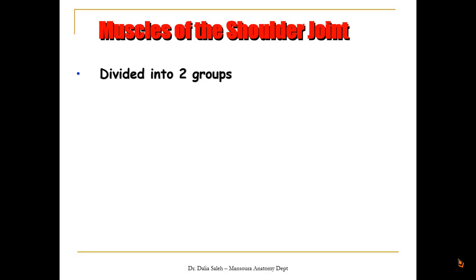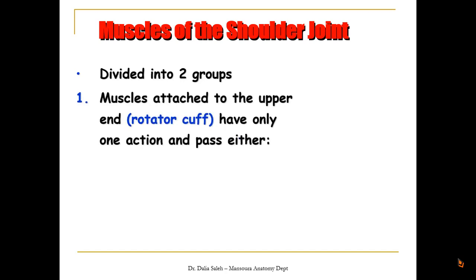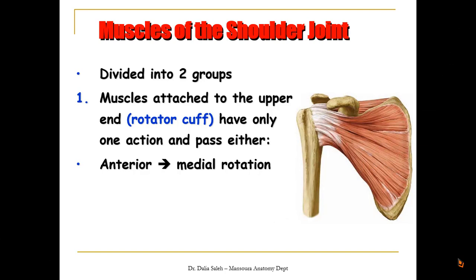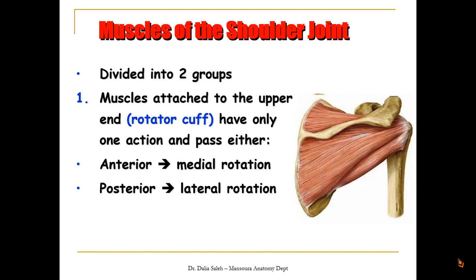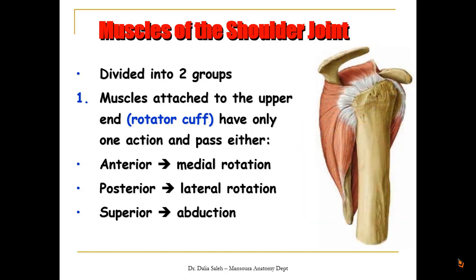The muscles of the shoulder joint are divided into two groups. First, the rotator cuff muscles attached to the upper ends of the humerus: the subscapularis passes anterior to the head of the humerus causing medial rotation; the infraspinatus and teres minor pass posterior producing lateral rotation; and the supraspinatus lies superior, initiating abduction. In this diagram, a lateral view of the shoulder joint shows the rotator cuff muscles — anteriorly the subscapularis, superiorly the supraspinatus, and posteriorly the infraspinatus and teres minor.